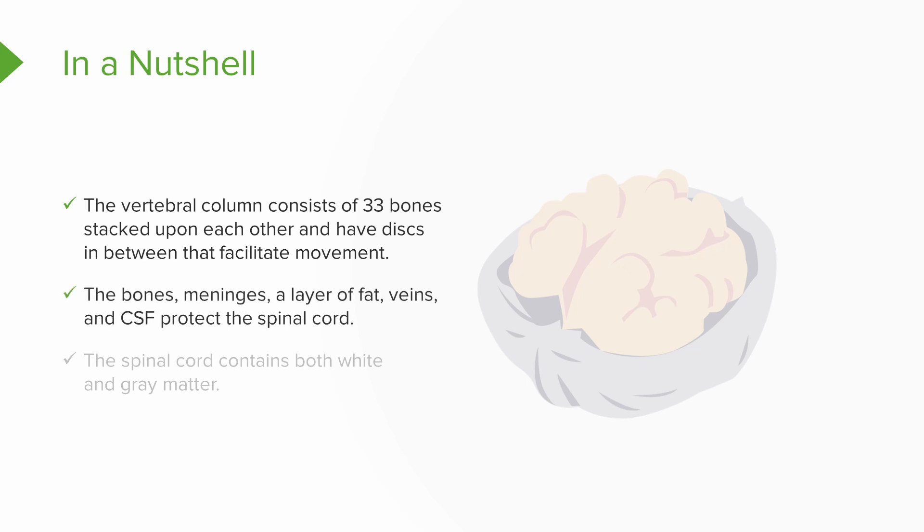The bones, meninges, a layer of fat, veins, and CSF are what protect the spinal cord.